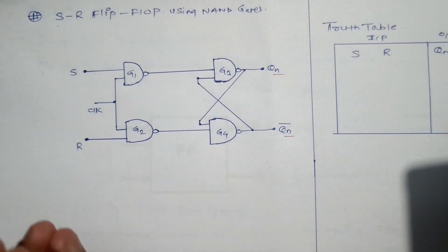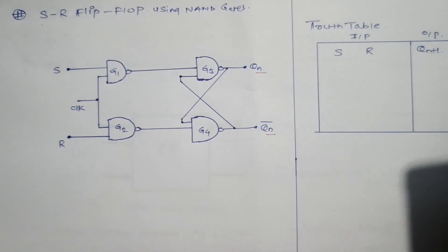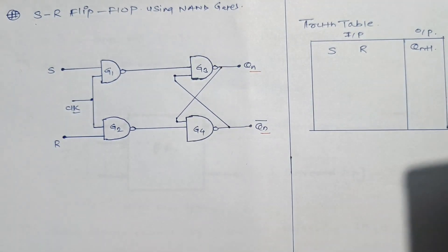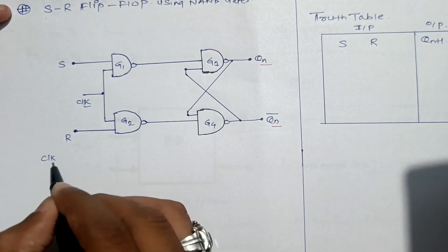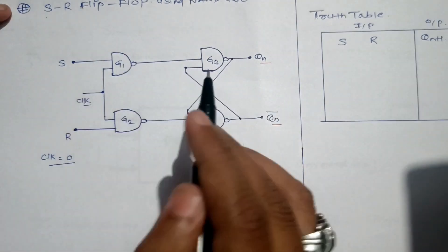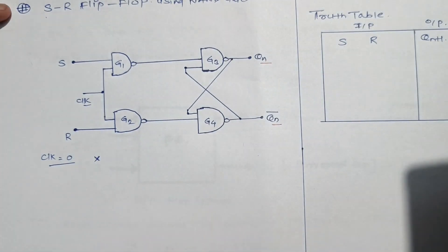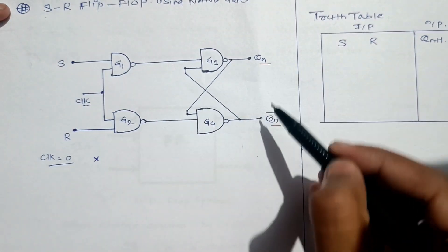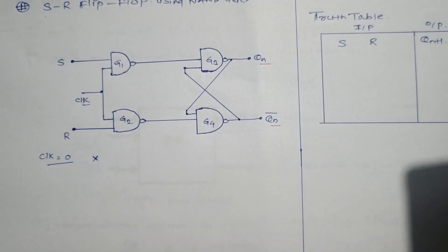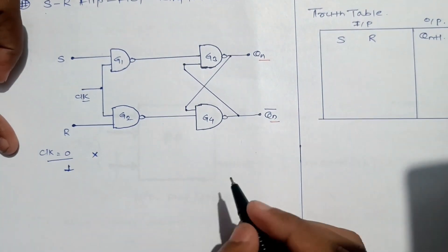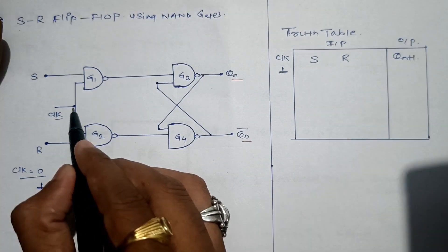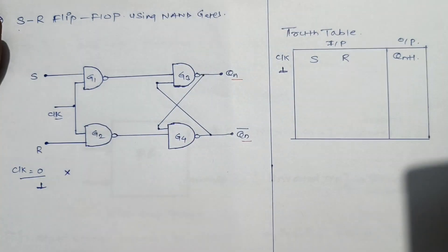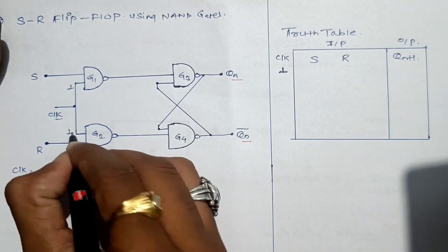The clock is a triggering signal and can have two values: 0 or 1. Whenever the clock is equal to 0, the circuit will not accept any input — no input is accepted, so the output will remain in the same state. When the clock becomes equal to 1, the circuit will start to accept the input.